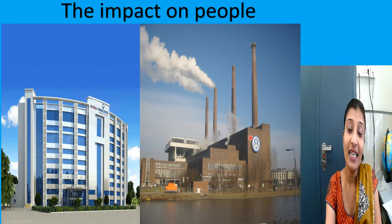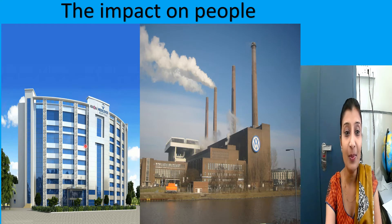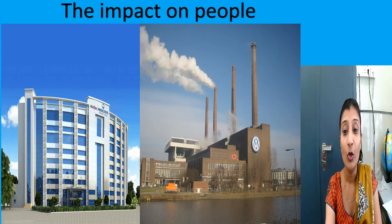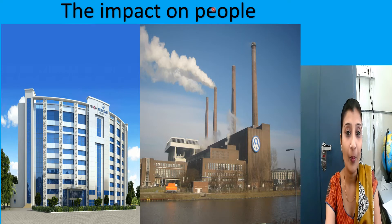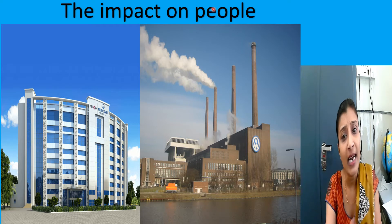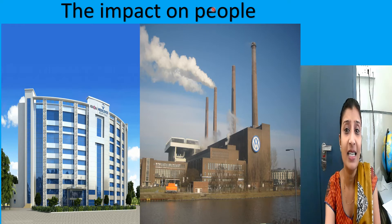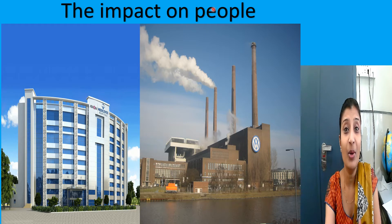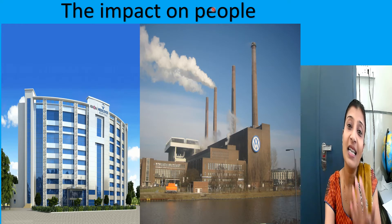We will study about the impact on people due to advanced technology and scientific development. Look at these pictures children — a very big hospital and a huge industry. People now get high standard medical treatment to live long. For example, earlier before the 19th century there was no treatment for cancer and people used to die. But today there is treatment for cancer. Hospitals treat patients by giving radiation and chemotherapy and a person's life is extended.